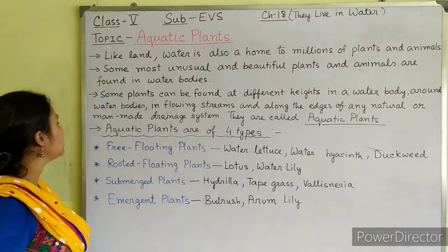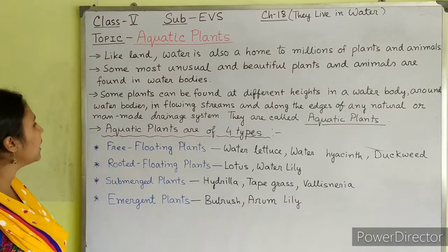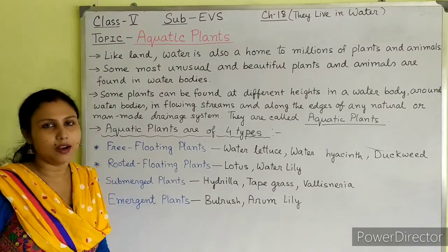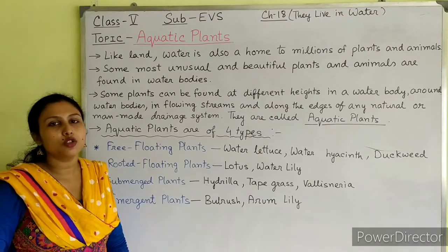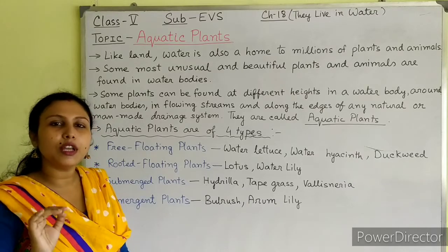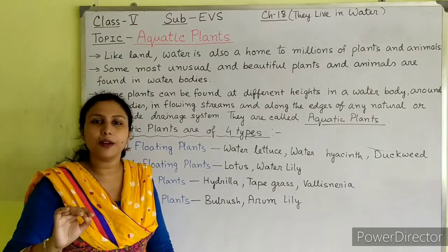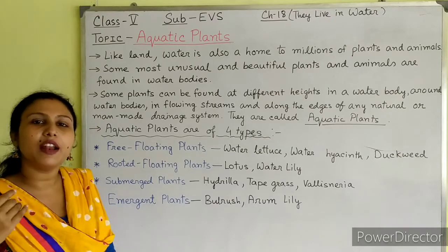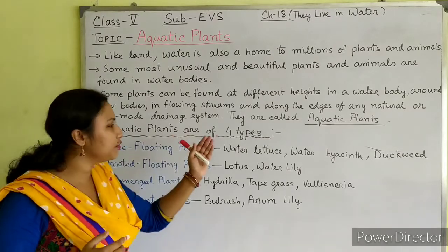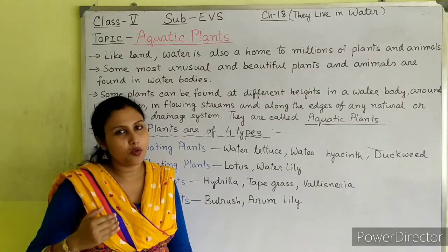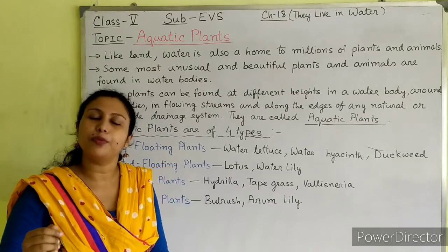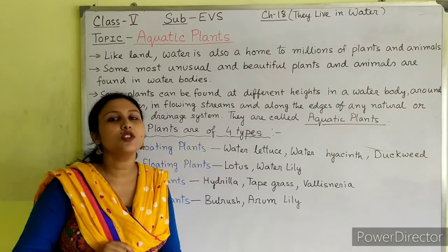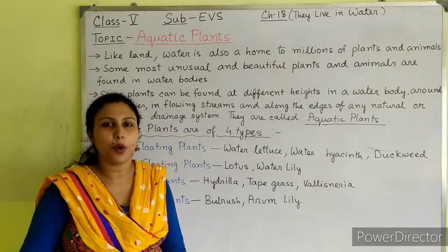Now we will learn about these four types of aquatic plants one by one. I will show you pictures of the different types of plants and explain each of them one by one. Students, observe the pictures carefully and listen to my explanation properly.